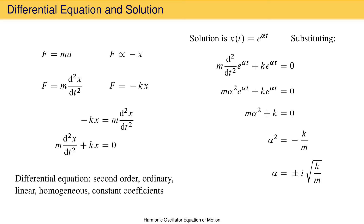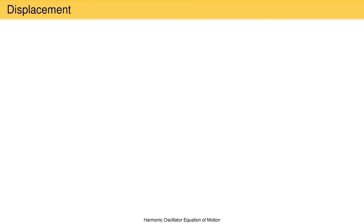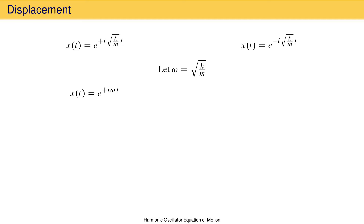As a reminder, the square root of negative one is the imaginary number i. We now have solutions for the differential equation. We define omega to be the square root of k over m, so the two solutions are e to the positive i omega t and e to the negative i omega t. Both are perfectly valid solutions to the differential equation, and that just looks better than having square roots in the exponent.